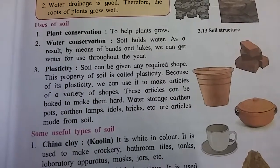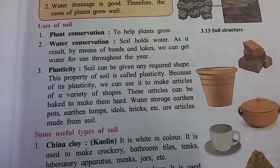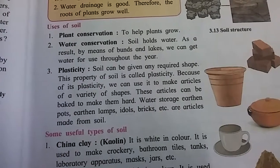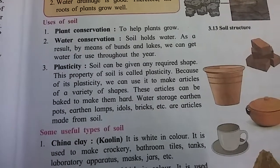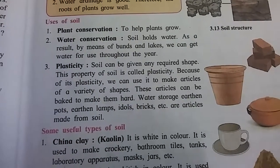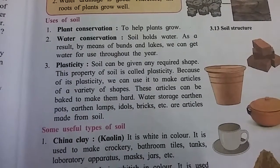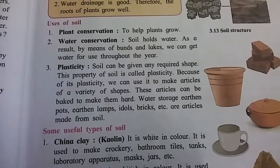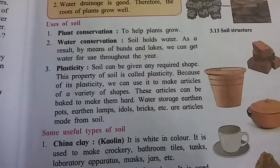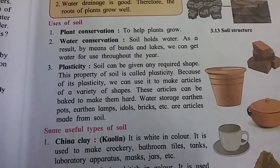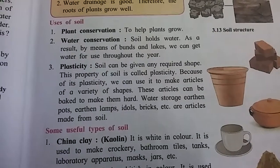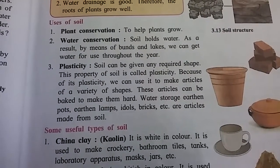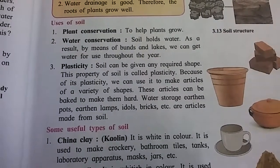Number three: properties of natural resources. Our next point is uses of soil. First use of soil is plant conservation — soil is very important for the growth of plants. Second use is water conservation.